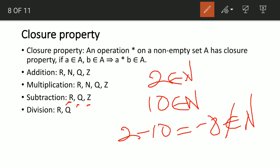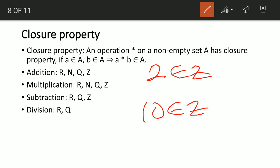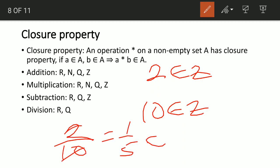Division is only closed for real numbers and rational numbers. It is not closed for integers. For example, 2 and 10 are both integers, but 2 ÷ 10 = 1/5, which is not an integer. So division is not closed for integers or natural numbers, but it is closed for real numbers and rational numbers Q.